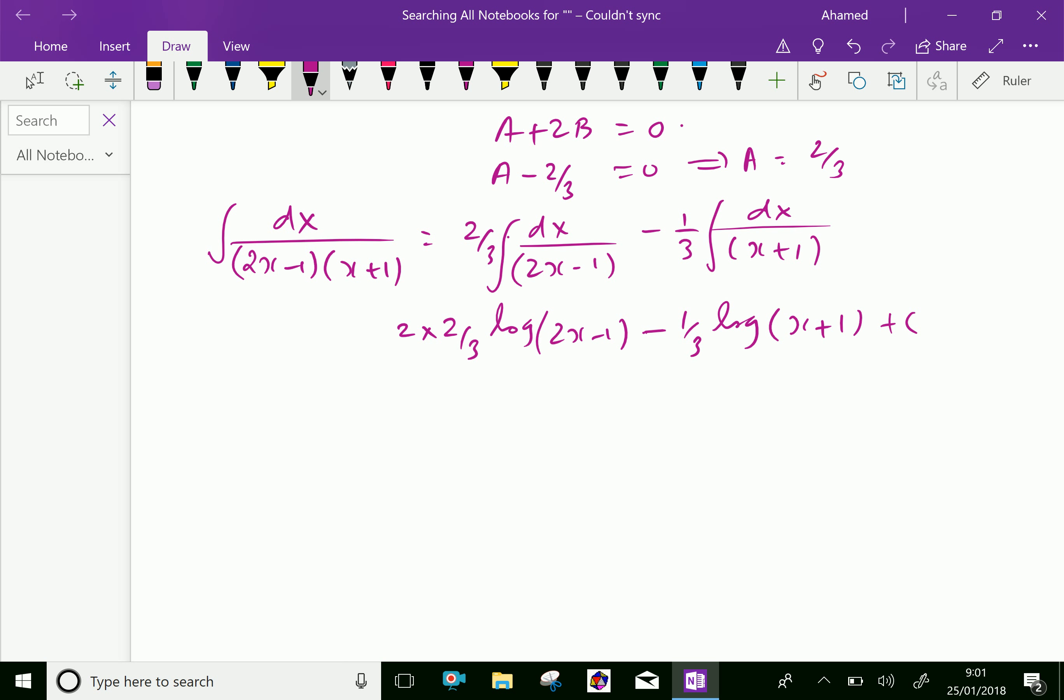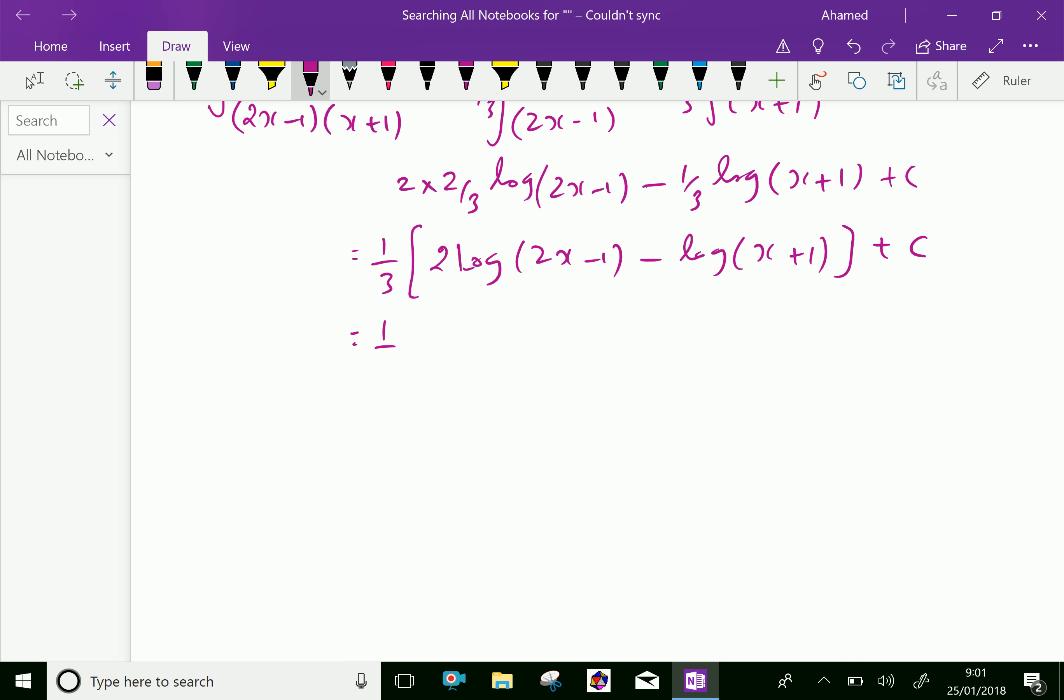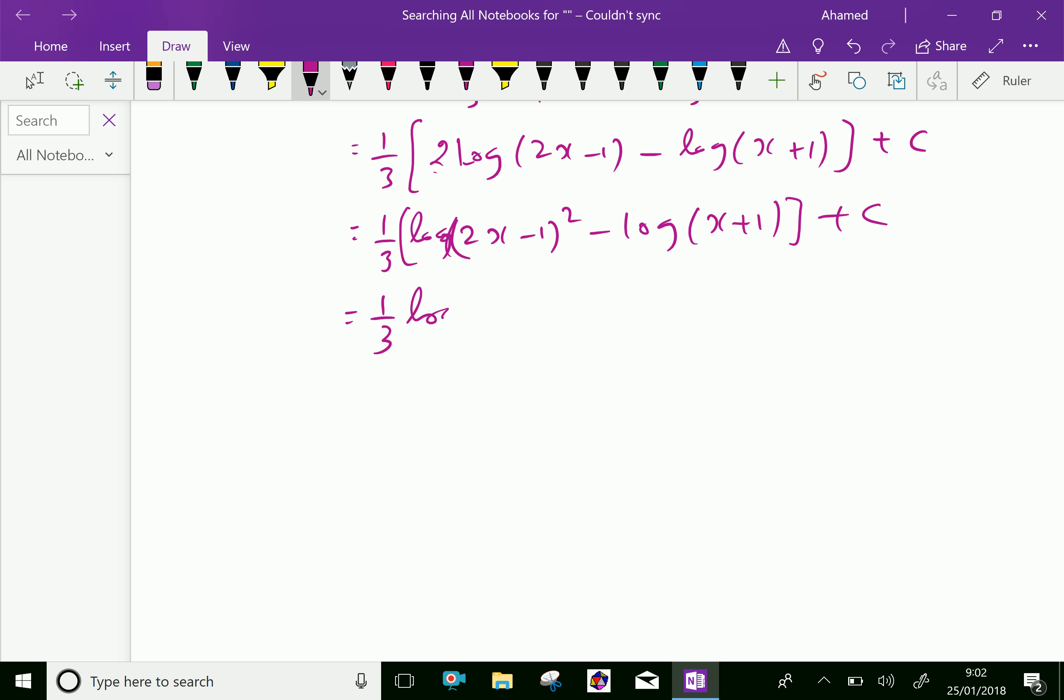Then we will write: take 1 by 3 common, write 2 log of 2x minus 1 minus log of x plus 1 plus c. Then we can write 1 by 3 common, the 2 goes as square, therefore log of 2x minus 1 whole squared over x plus 1 plus c. Now we can write 1 by 3 log 2x minus 1 whole squared over x plus 1 plus c. We have done.